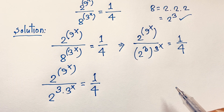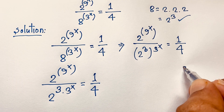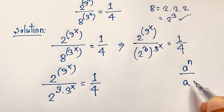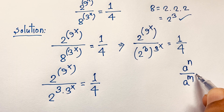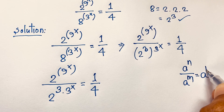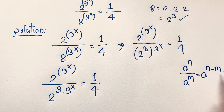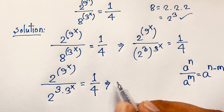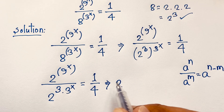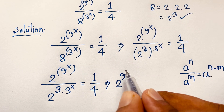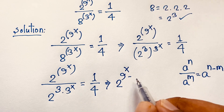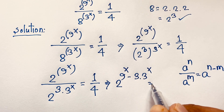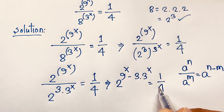According to the exponential formula, we know that a to the power n over a to the power m equals a to the power n minus m. Applying this formula here, the expression becomes 2 to the power 9x minus 3 times 3 to the power x, and this equals 1 over 4.